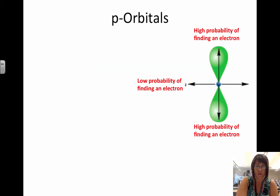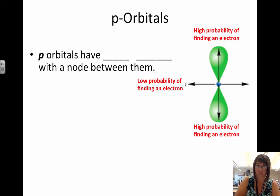The p orbitals are a bit more complex. A p orbital is made up of two lobes with a node in between them, where in the node there's a very low probability, close to zero probability, of finding an electron within the node.